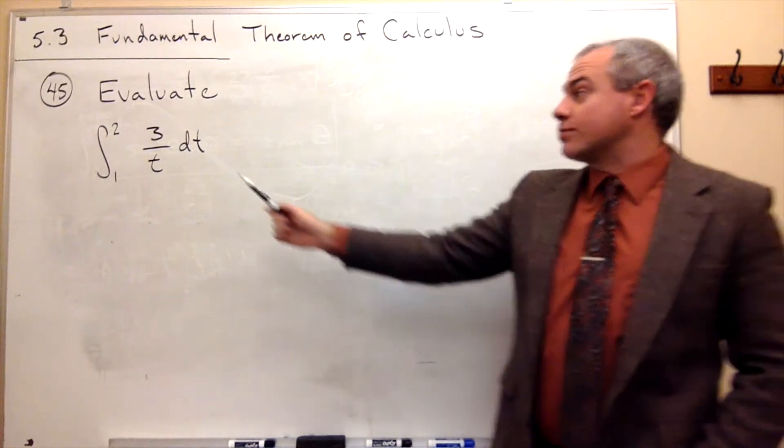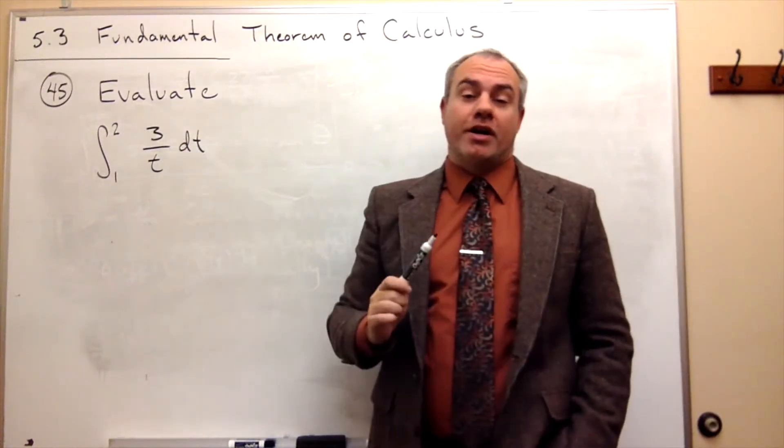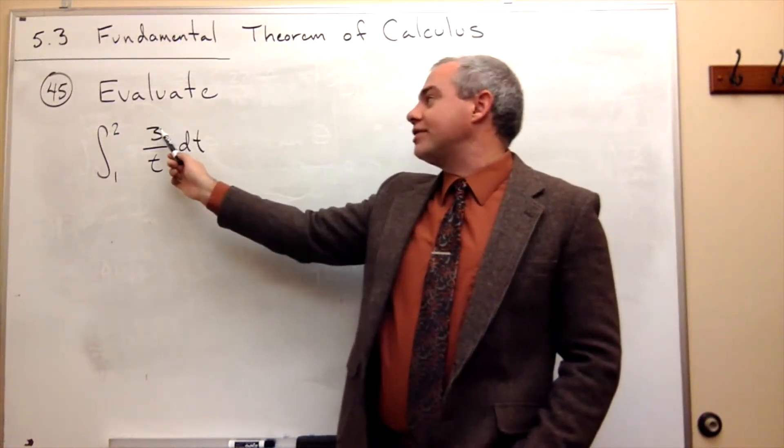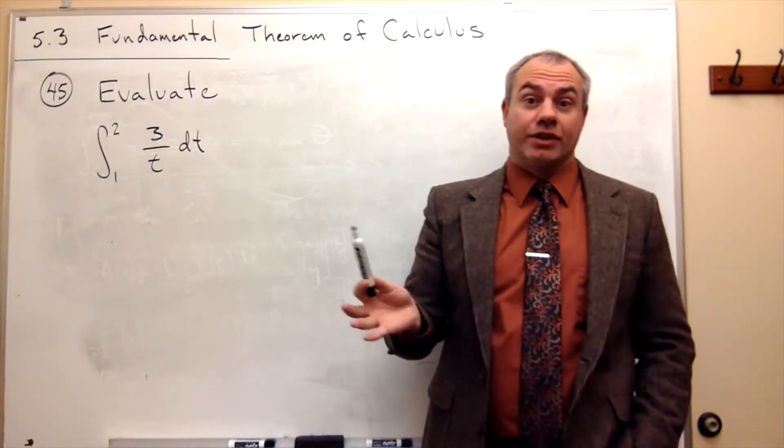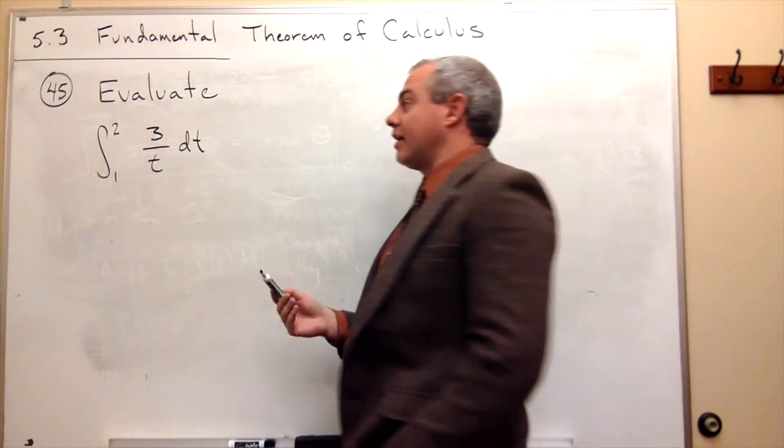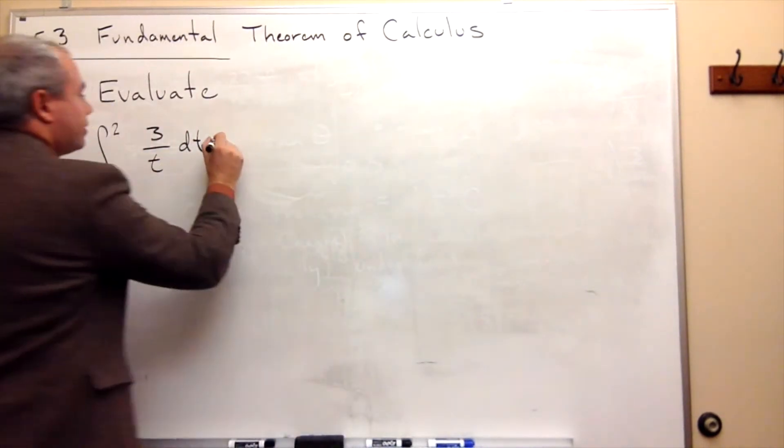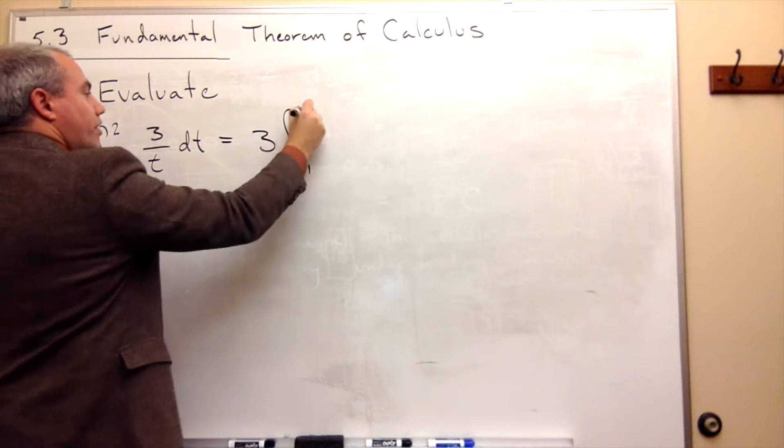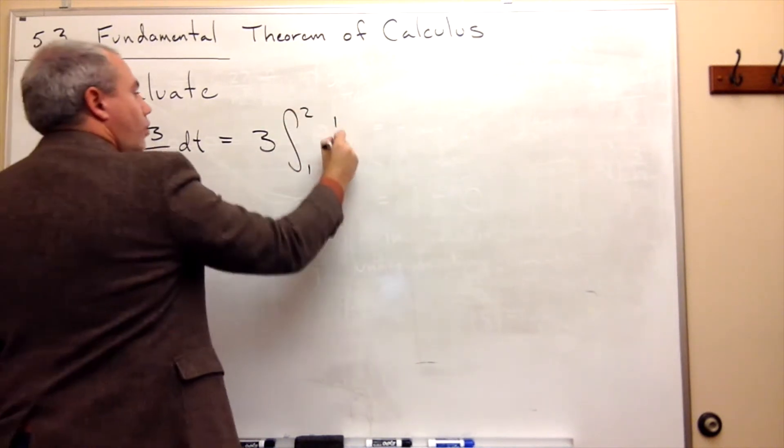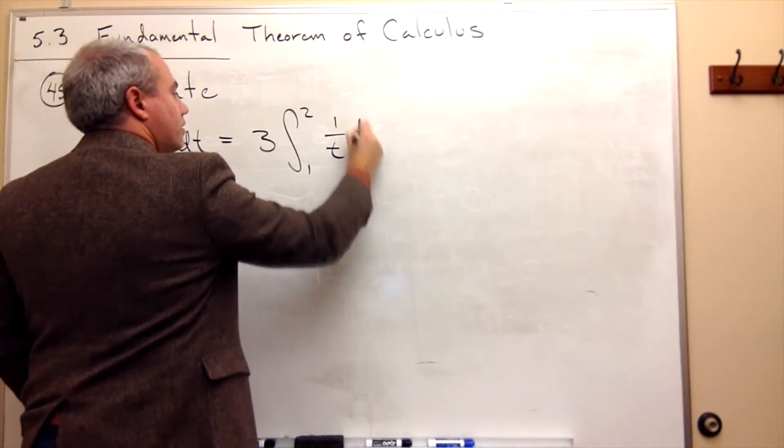Now the first thing I notice here is we've got a 3 in the numerator and we could, if we wanted to, just pull that 3 outside the integral. We don't have to, but it will make it more clear to us what to do next. So we go from 1 to 2 of 1 over t dt.